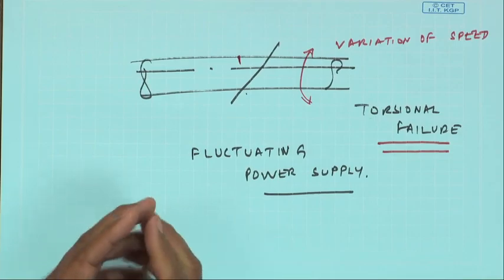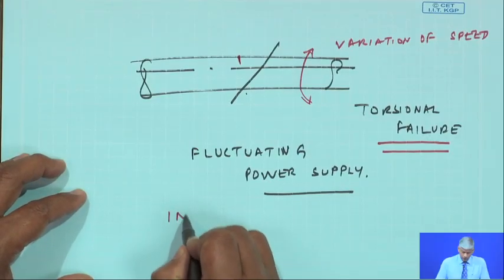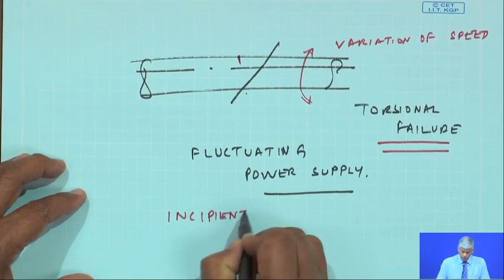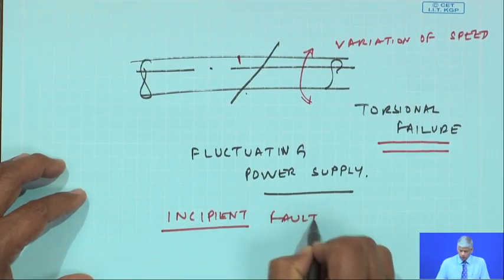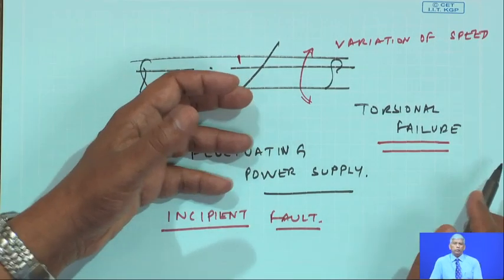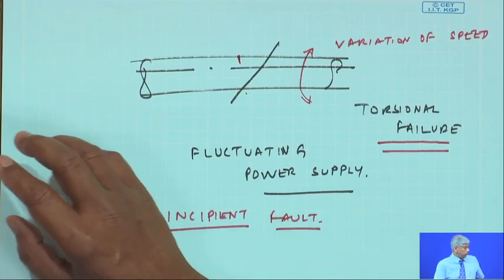One must safeguard in CBM, machinery health monitoring, or condition monitoring: one incipient fault if it goes undetected will lead to further faults. Nowadays in condition monitoring research throughout the world, people are finding methods to detect incipient faults in bearings, gears, and shafts — that is the thrust area today.